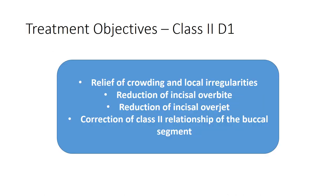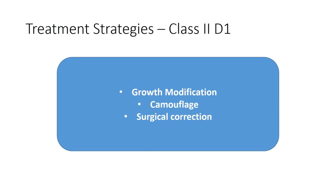The treatment objectives in Class 2 Division 1 malocclusion are: to relieve crowding and correct local irregularities, to reduce the incisor overbite and overjet, and to correct the Class 2 relationship of the buccal segment.